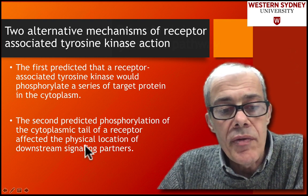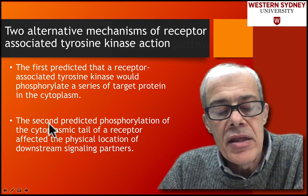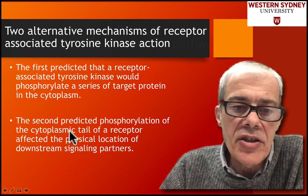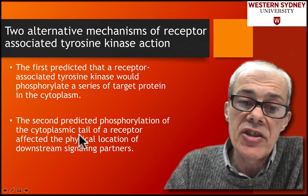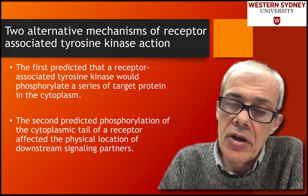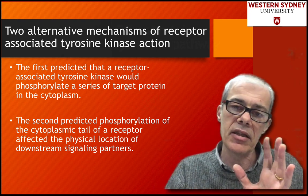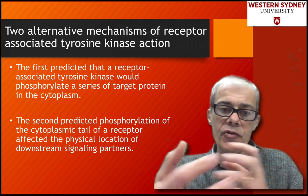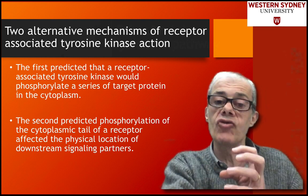But the other school of thought was that the next important thing in the signaling pathway was the actual phosphorylation of the cytoplasmic domains of the receptor itself. So two schools of thought: one is that the receptor phosphorylates things in the cytosol and that's important; the other was that the receptor is phosphorylating itself, and maybe that's the next stage important in signaling — that's going to drive something.